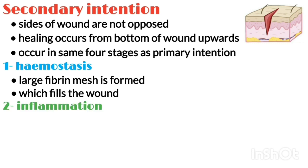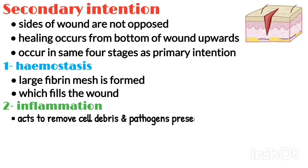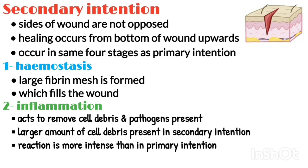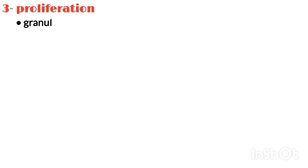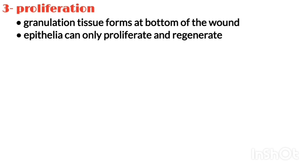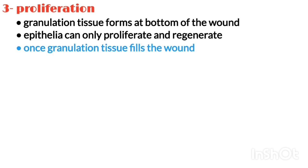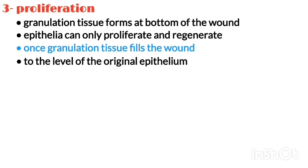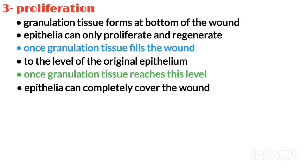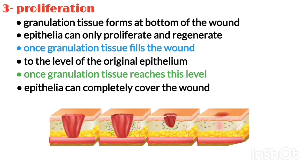Number two is inflammation. An inflammatory response acts to remove any cell debris and pathogens present. There is a large amount of cell debris present and the inflammatory reaction tends to be more intense than in primary intention. Number three is proliferation. Granulation tissue forms at the bottom of the wound. This is an important step as the epithelium can only proliferate and regenerate once the granulation tissue fills the wound to the level of the original epithelium. Once the granulation tissue reaches this level, the epithelium can completely cover the wound.